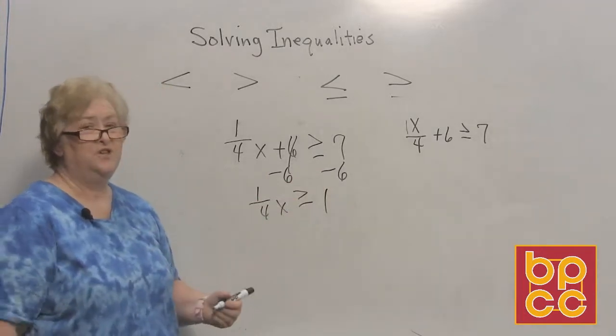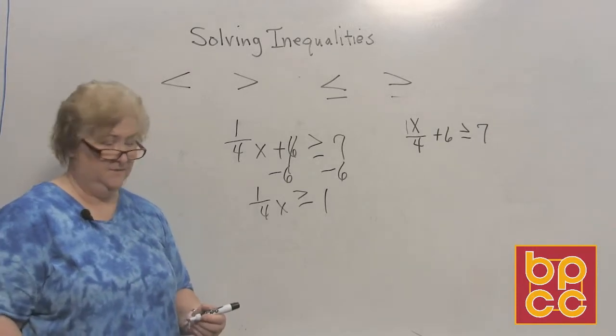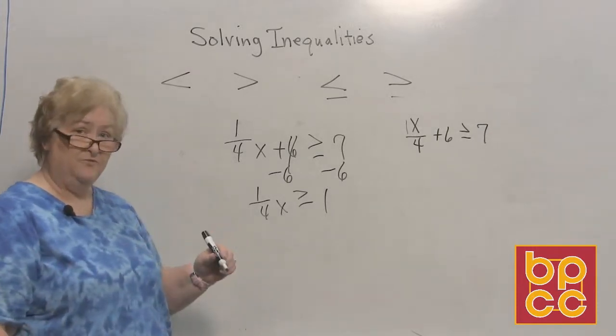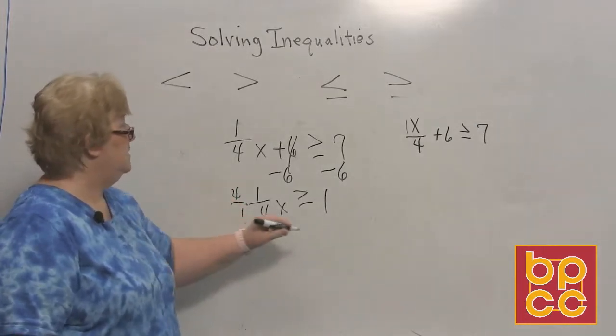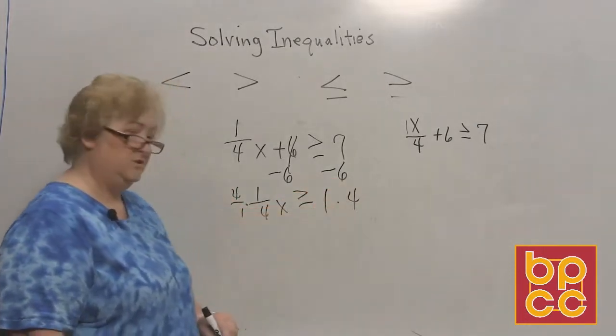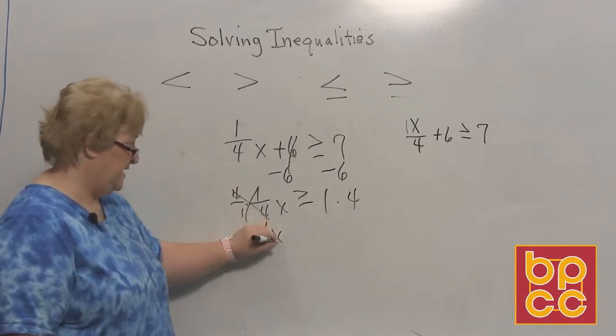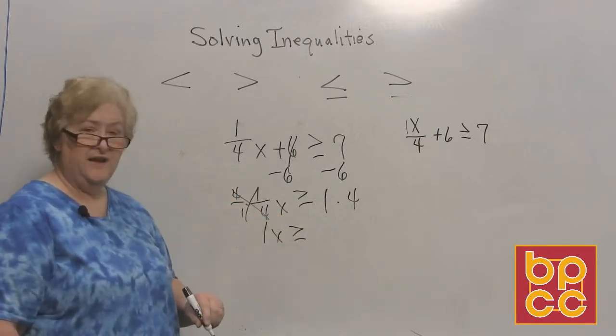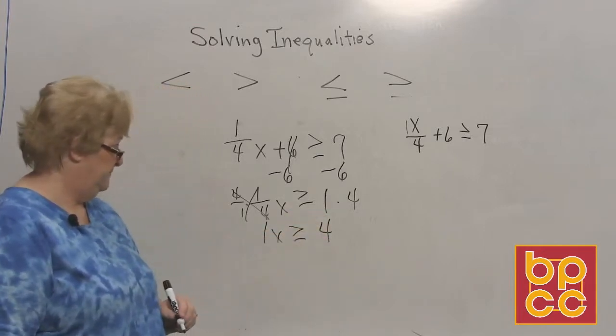But I don't want to solve for 1 fourth x. I want to solve for a positive 1 whole x. So let's multiply by the reciprocal, which is a positive 4 over 1 or 4. And on this side 4 as well. These clear out to a positive 1 x. And 1 times 4 is 4.